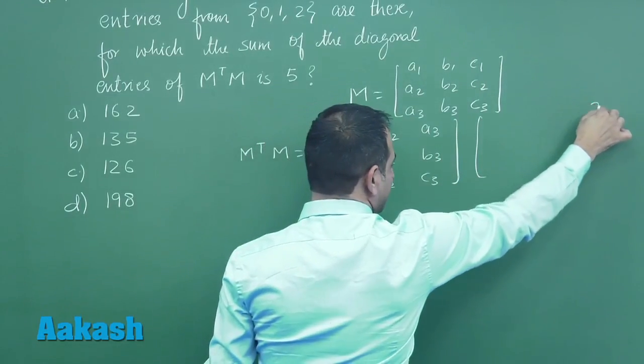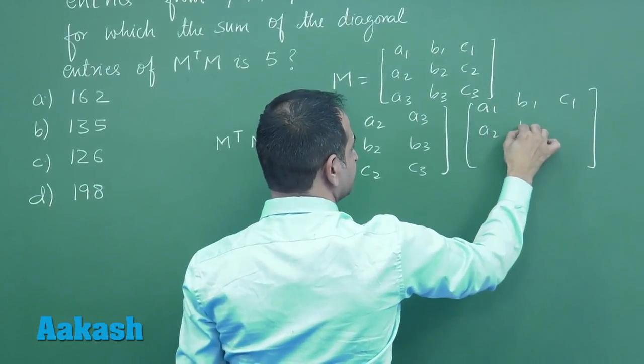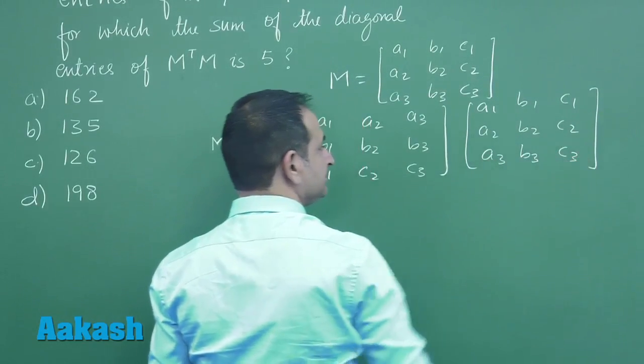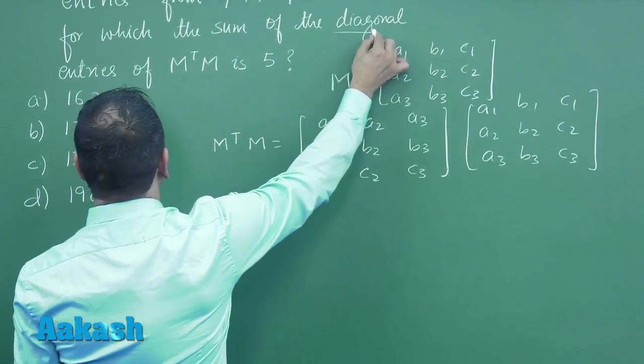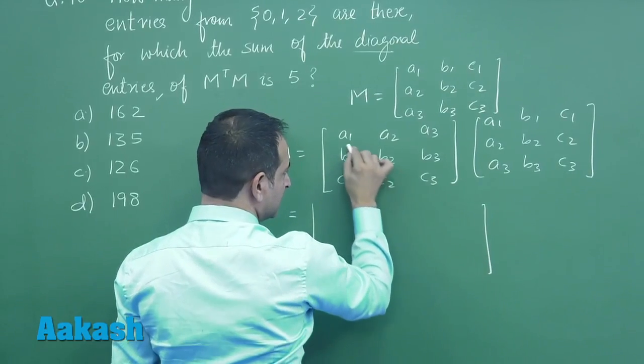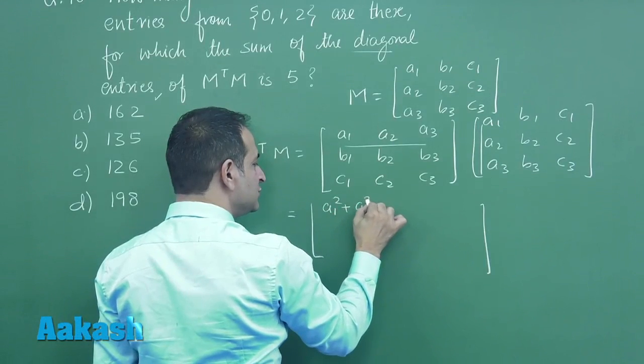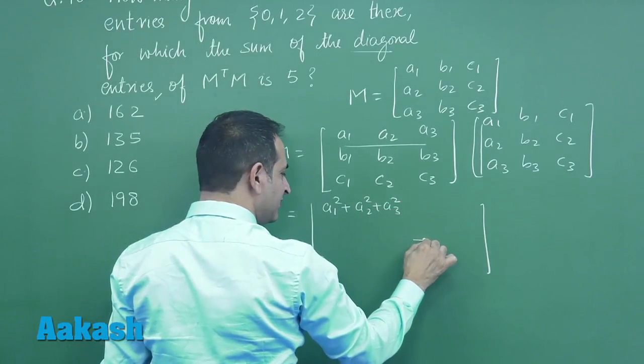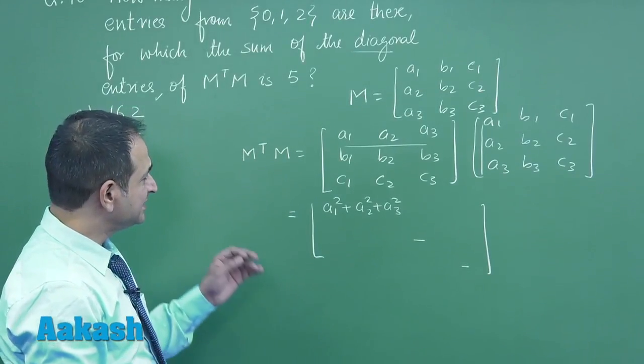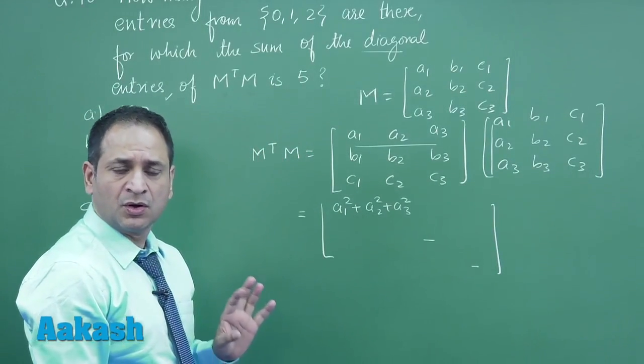Now when we multiply this with M, which we have assumed here, you can clearly notice a very important thing. The diagonal entries - we have to look only for the diagonal entries. The first diagonal entry is A1 square, A2 square, and A3 square. Similarly we can go for this and this. When you calculate all the diagonal entries, it is simply sum of squares of all the numbers or all the entries.